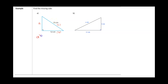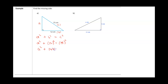We know that in any right triangle, a squared plus b squared equals c squared. Side a is missing, so I'll leave that alone. Side b is 12, giving us 12 squared, and c is 15, giving us 15 squared.